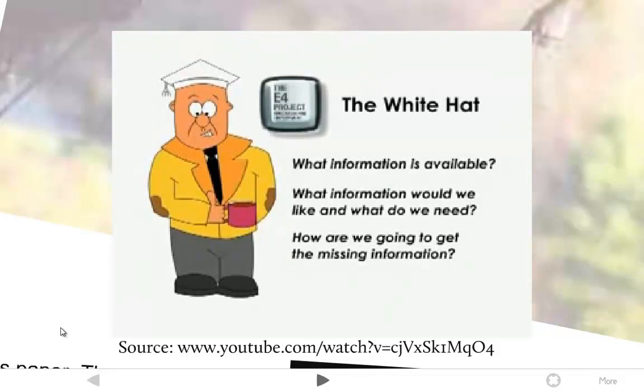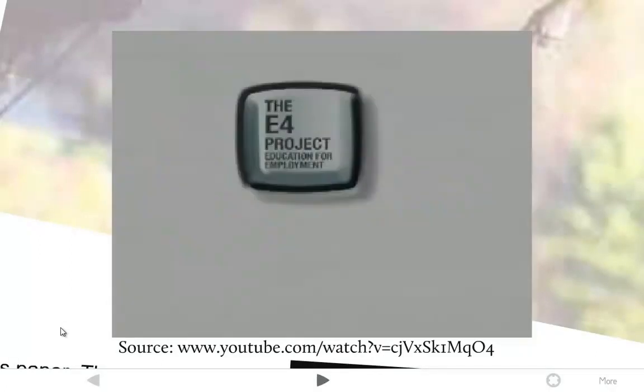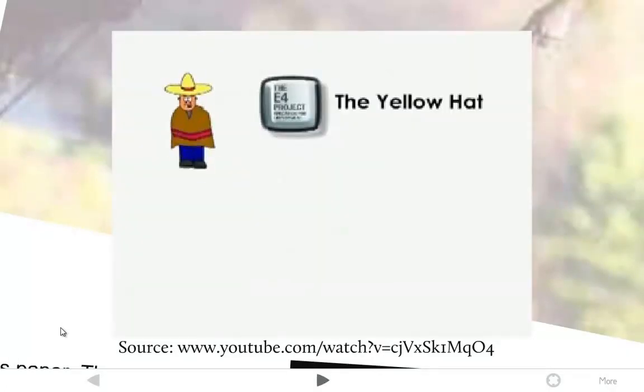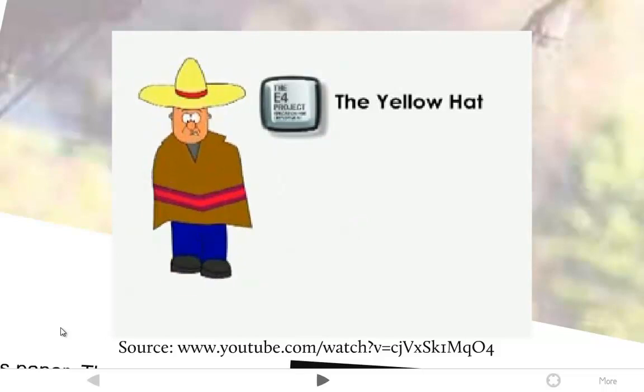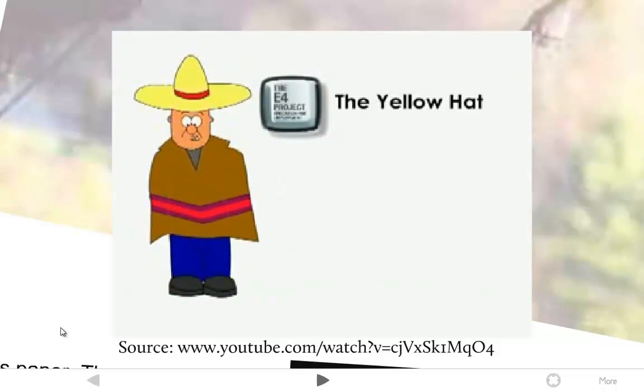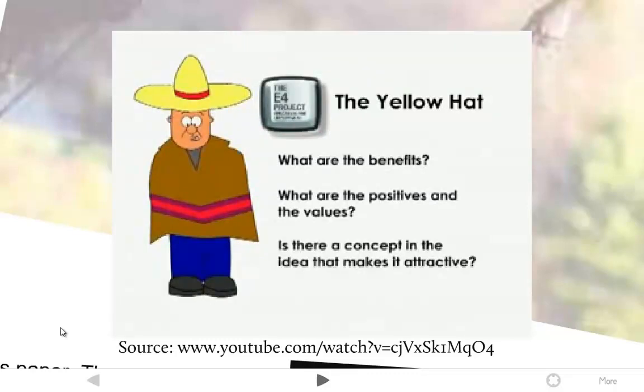The yellow hat is called the positive hat. It focuses on the advantages. Think of the sunshine. The yellow hat asks: what are the benefits, what are the positives and the values, is there a concept in the idea that makes it attractive. The yellow hat requires a deliberate decision. It helps reinforce creative ideas and new directions. You must give reasons why an idea is valuable or might work.